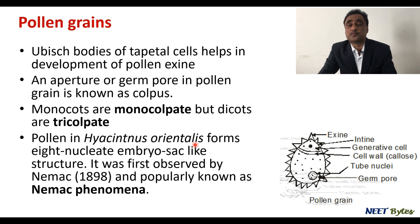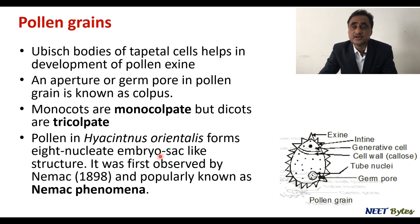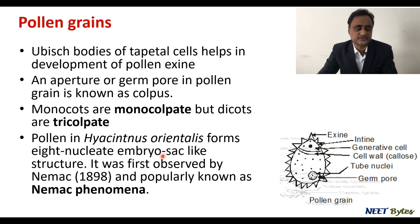In pollen of Hyacinthus or Lilium, an eight-nucleate embryo sac-like structure is found. This was first observed by Nemec, and the phenomenon is called the Nemec phenomenon. However, this does not occur across different plants and is an exceptional condition in which an eight-nucleate embryo sac-like structure is observed in pollen grains.